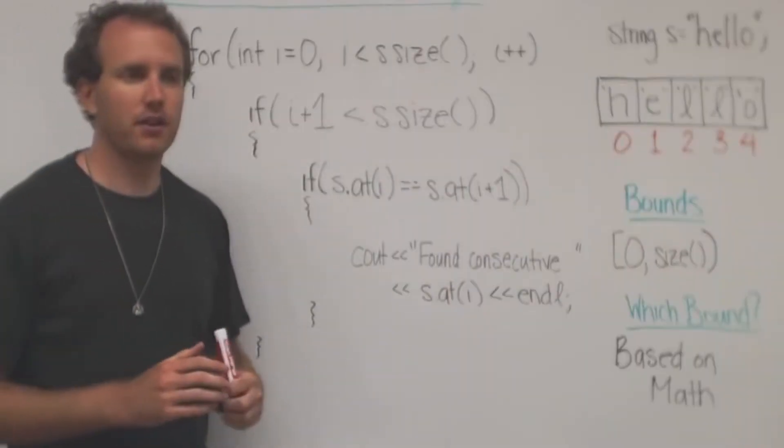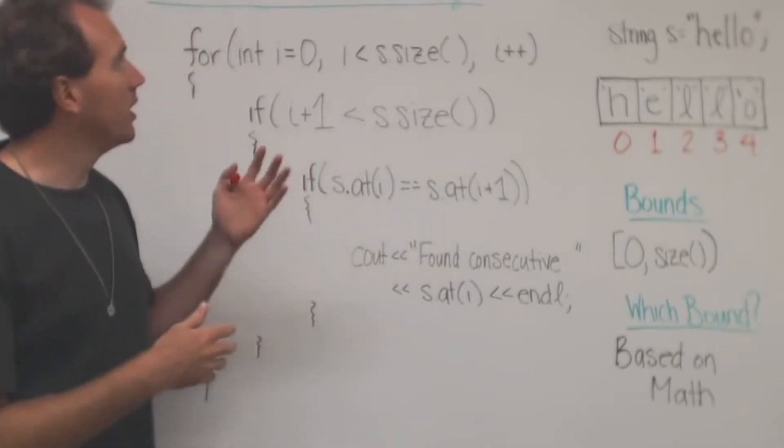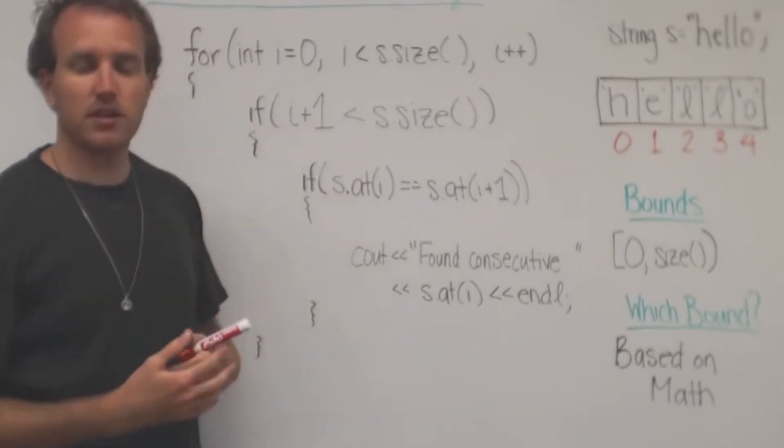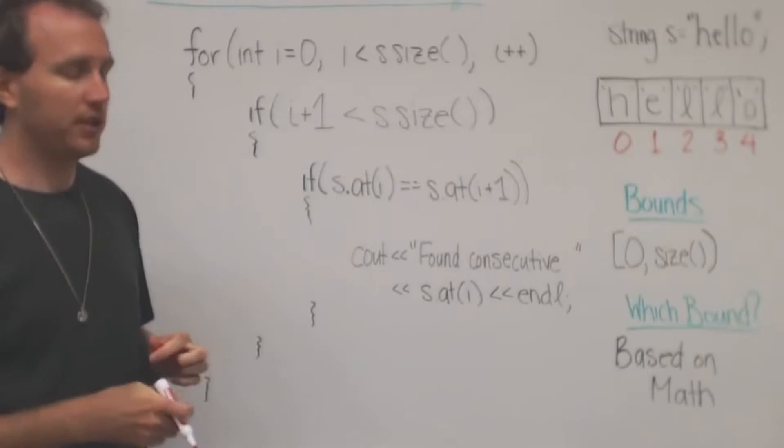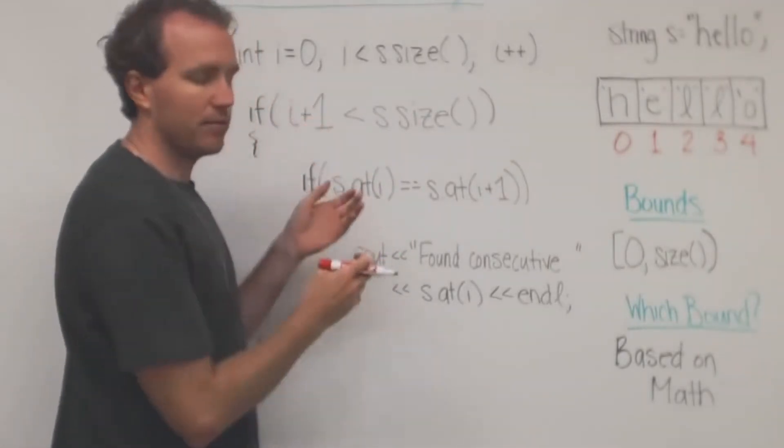In this video, we're going to cover how to transition from a nested if statement to a short-circuited compound boolean because we want to execute both of these statements.